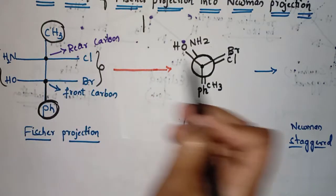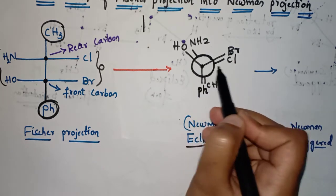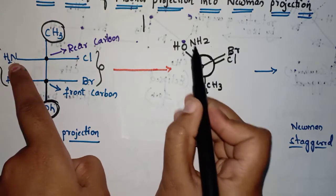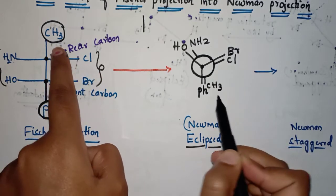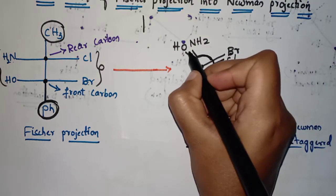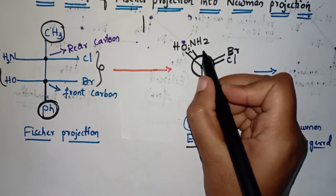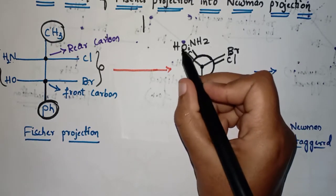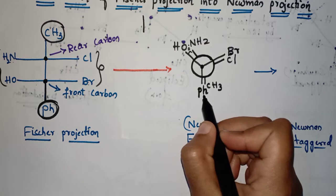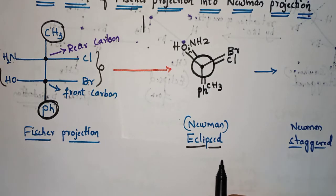Please remember that rear carbon groups are represented on the circle only. This circle represents the rear carbon, so on the circle we have written NH2, Cl, and CH3. Now we have got the Newman eclipsed form. The angle between the front and rear groups is zero degrees because NH2 is present behind OH, Cl is behind Br, and CH3 is behind Ph.